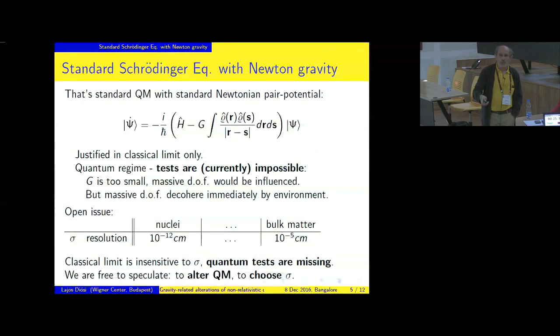So the issue is open: what is the resolution? Is it nuclear size, or twelve orders, or seven orders of magnitude bigger, 10 to minus five centimeters? Unfortunately or fortunately, the classical limit of this standard Schrodinger equation with Newtonian pair potential is not sensitive to resolution sigma. And quantum tests are missing, as I said.